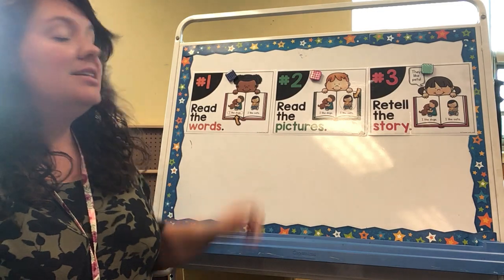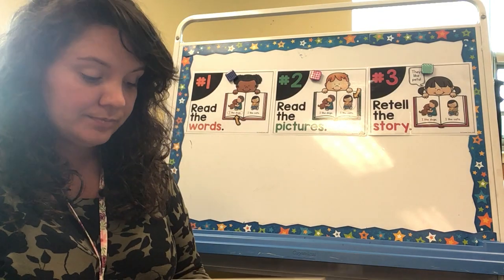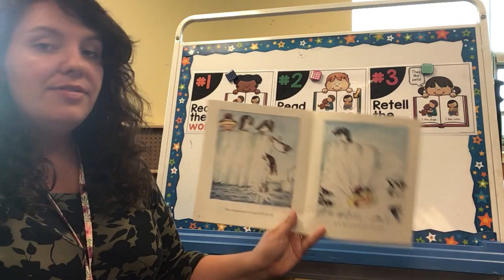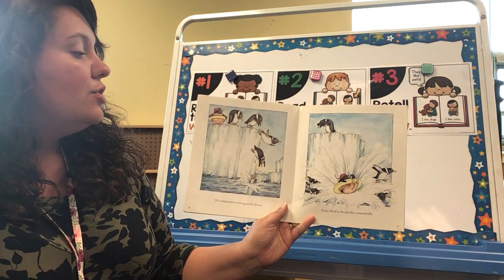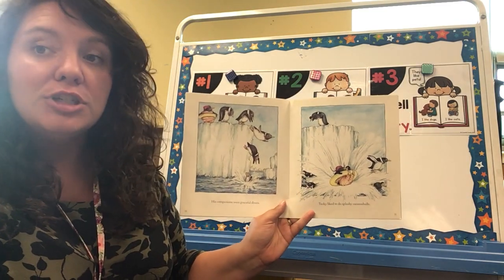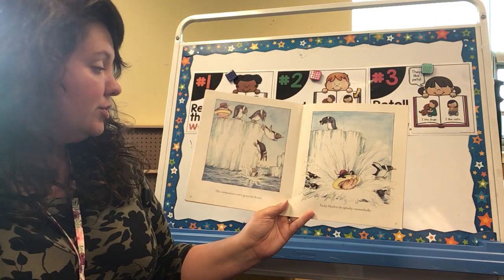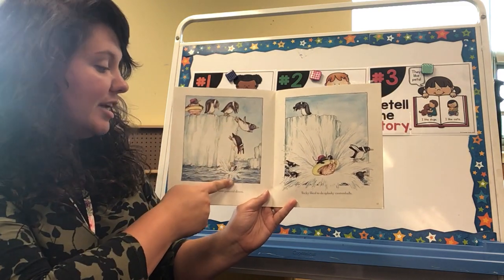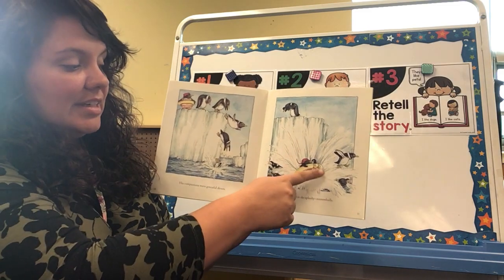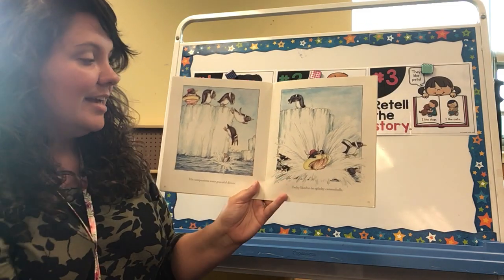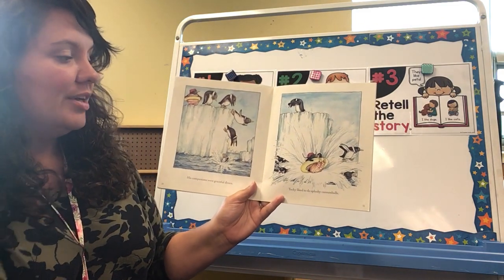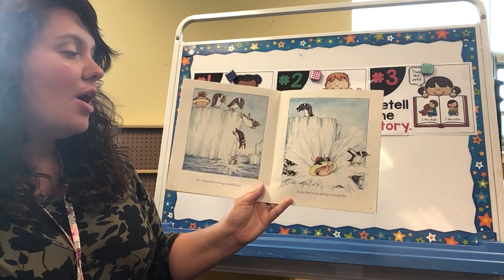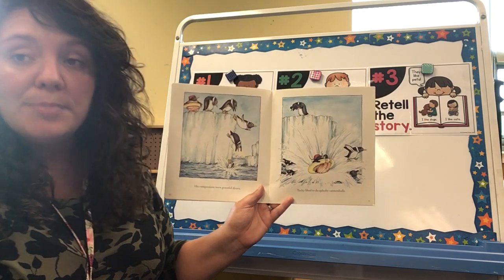The second way to read is to read the pictures. If I go to this page, you can tell what's happening just by reading the pictures. You can see that these penguins are diving gracefully in the water and then you can see Tacky right here is doing a cannonball, and you can see how the other penguins feel. So all of that was just by reading the pictures.